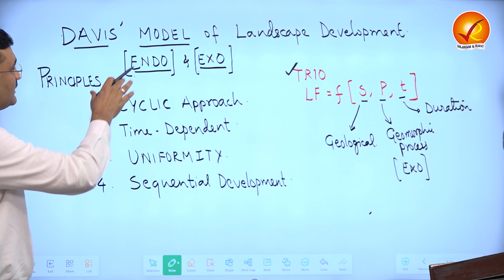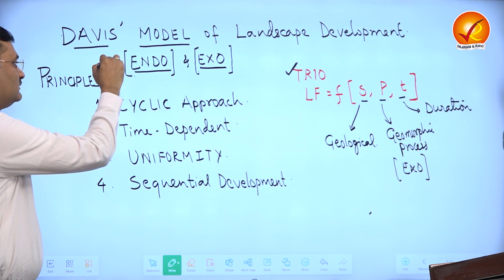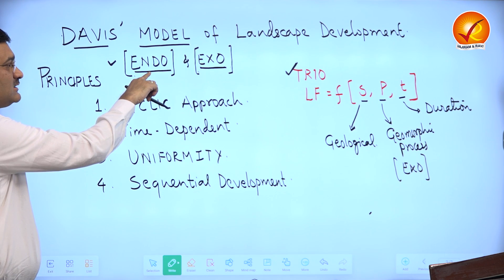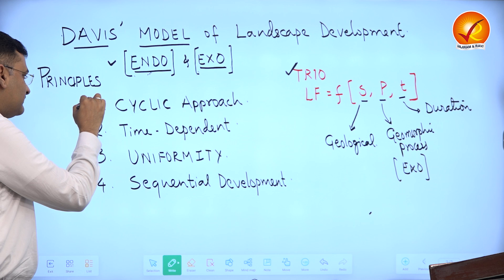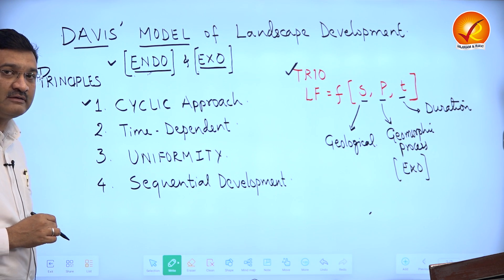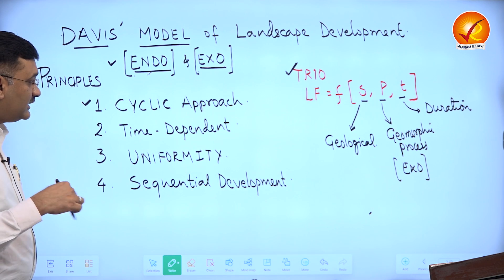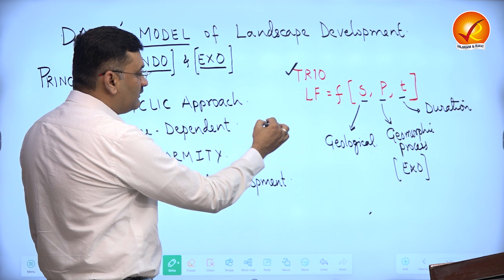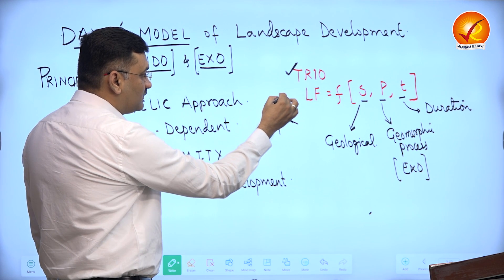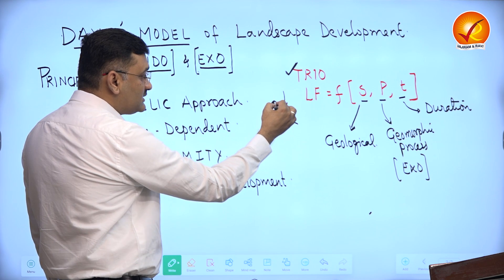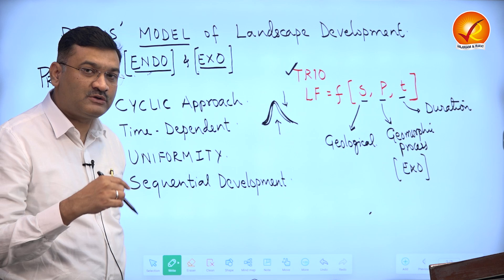There are certain principles on which we study the Davisian model. First is static equilibrium — the separation of endogenetic and exogenetic forces. The second principle is cyclicity. This approach is cyclic in the sense that we can see the evolution of the landform in a continuous manner: the landform is created by endogenetic force, brought down by exogenetic force, then again uplifted by endogenetic forces, and so on — one cycle after the other.